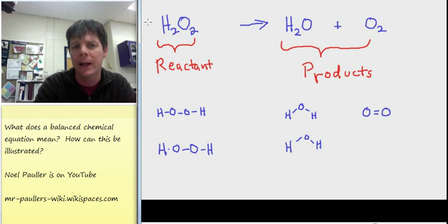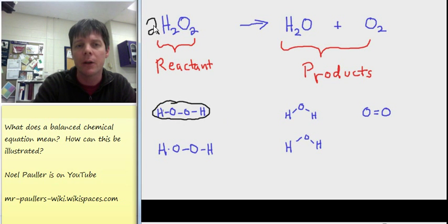So this is how we would write a representation of a balanced chemical equation. I'll use a coefficient two in front of hydrogen peroxide to indicate that there are, in fact, two molecules.